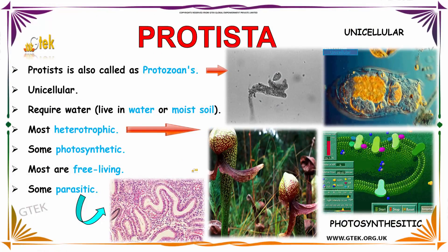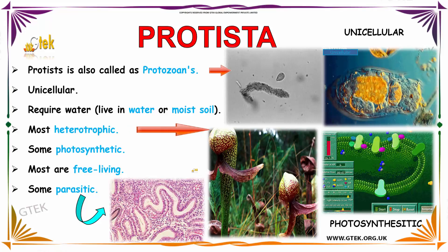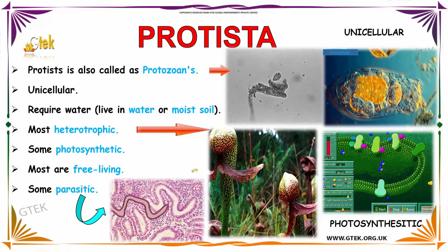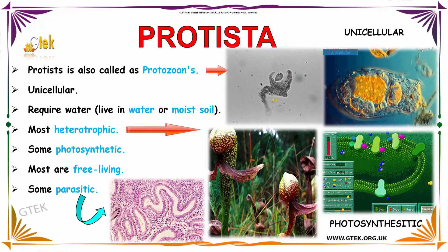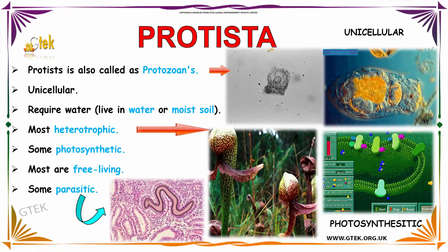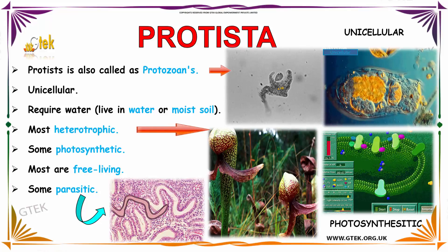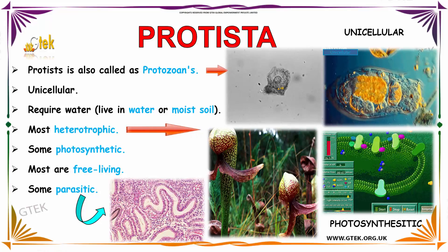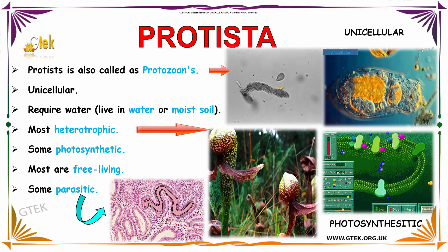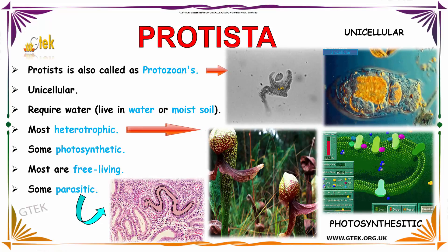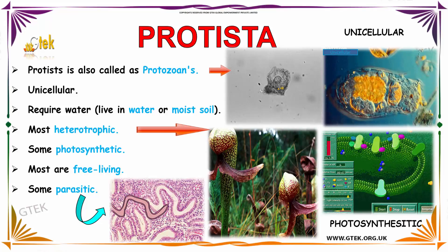Let us discuss about Protista. Protista is also called protozoans. Here are the protozoans — they are unicellular. They require water, meaning they live in water or moist soil. Most protozoa are heterotrophic.